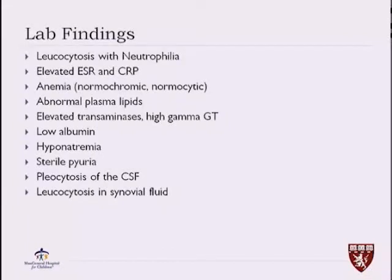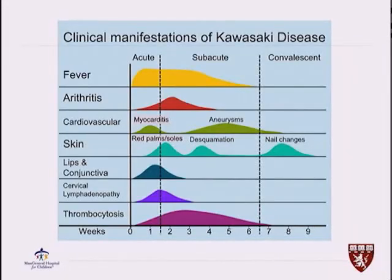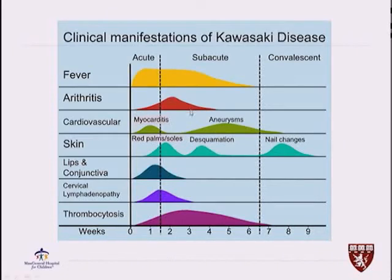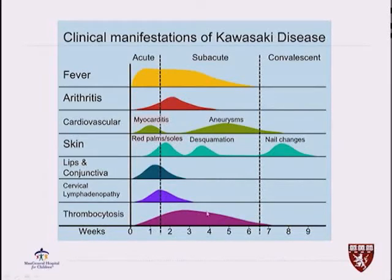They might come with leukocytosis in synovial fluid and thrombocytosis. The clinical manifestations of Kawasaki disease are actually time-dependent. Initially we have the fever. You can have arthritis and myocarditis later. The skin manifestations come in waves — red palms and soles in the first one to two weeks, and then desquamation comes later. After two months, you can have nail changes. And thrombocytosis is a later finding.